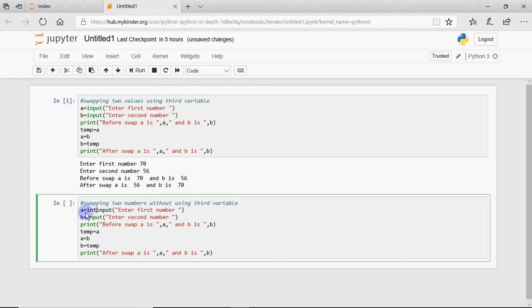Since we are working specifically on numbers here, we need to take the value as an integer. Otherwise, you will not be able to perform the arithmetic operations. So here we don't need temp, rather we just write A is equal to A plus B, and then I write B is equal to A minus B, and then A is equal to A minus B.